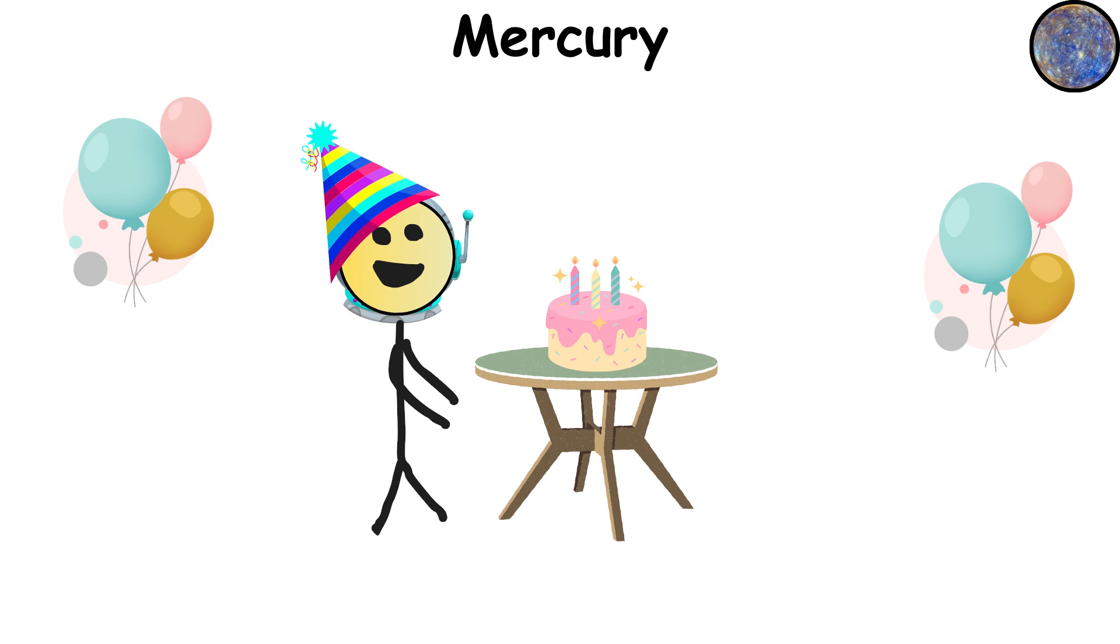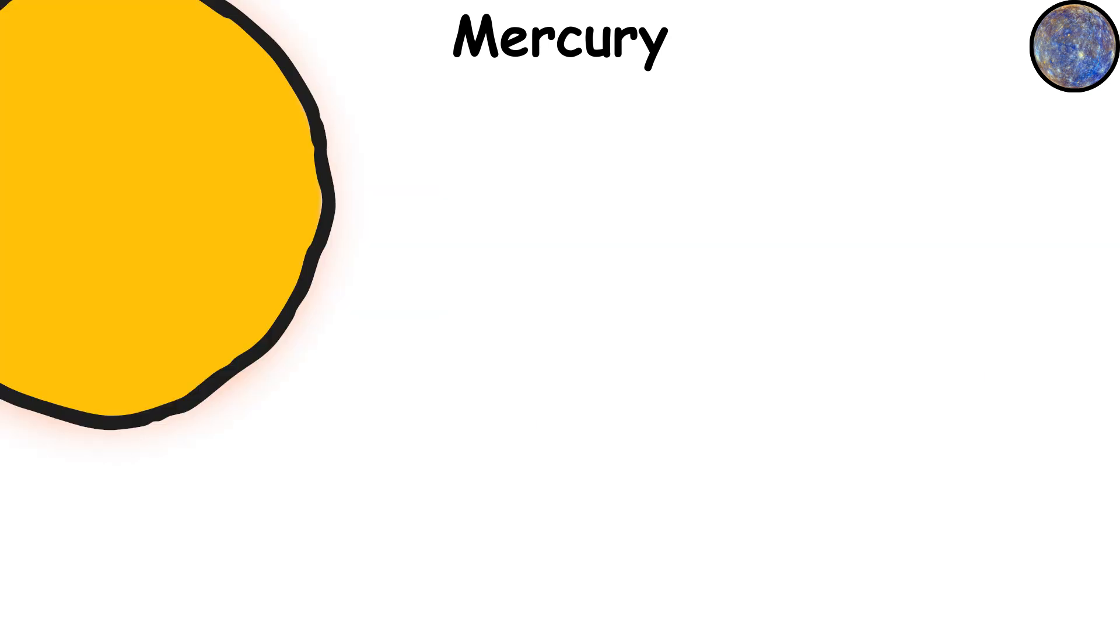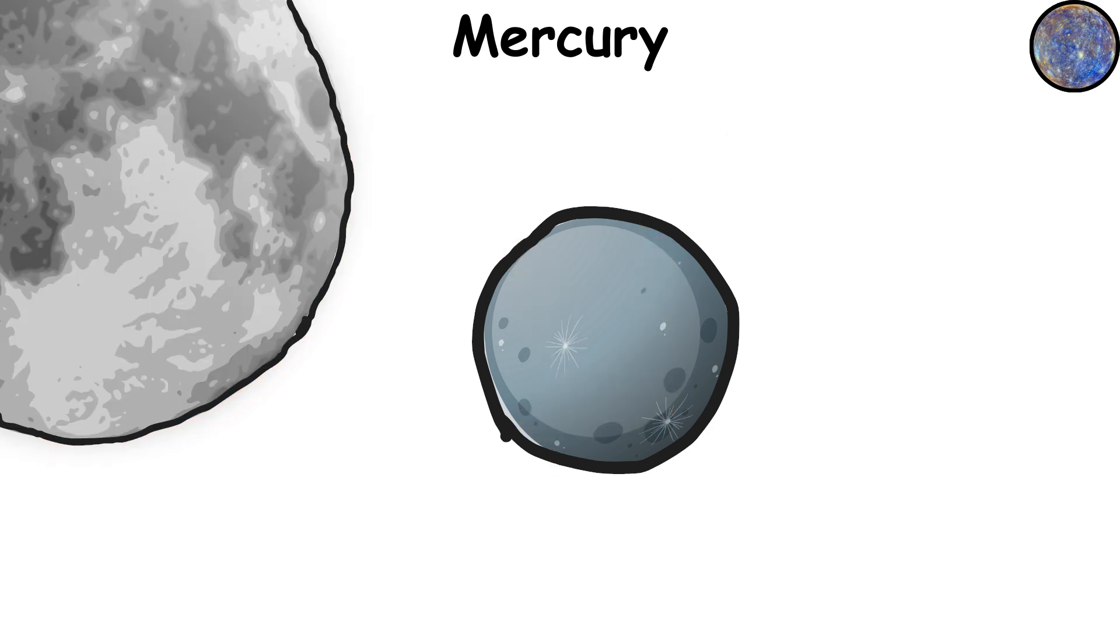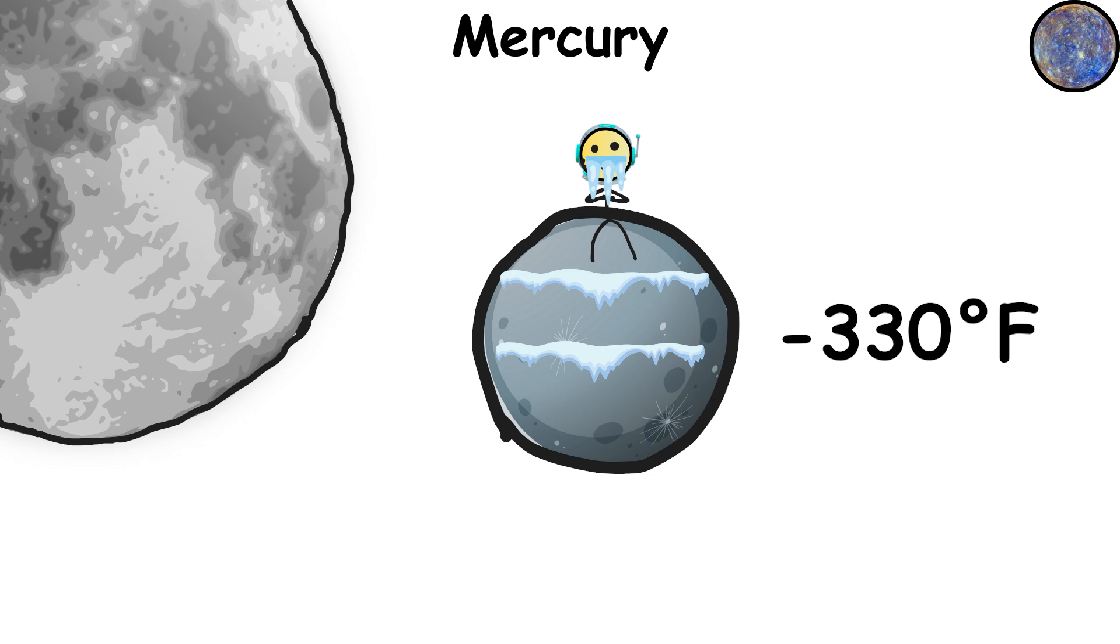But don't pack your sunscreen just yet. Daytime temperatures reach a crispy 800 degrees Fahrenheit, 427 degrees Celsius, but at night it drops to minus 330 degrees Fahrenheit, minus 201 degrees Celsius. That's a 1,130 degrees swing. Yikes.